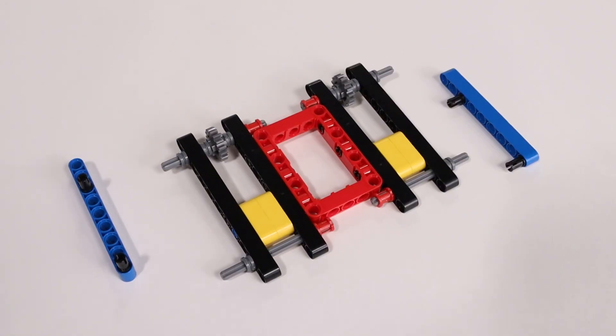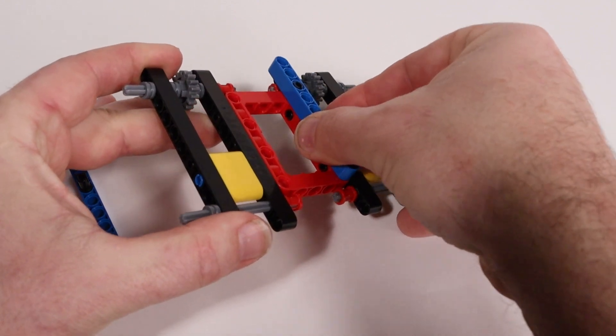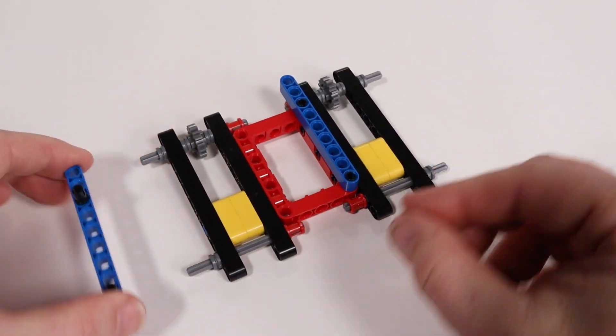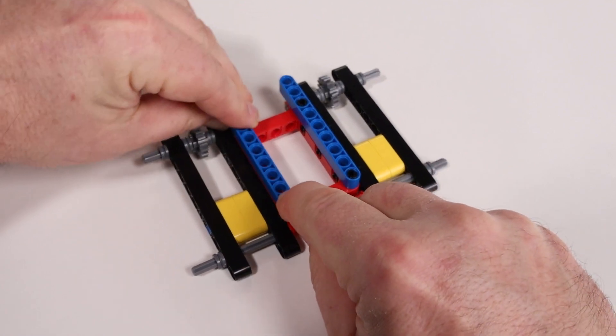Snap the blue beams onto the top of the red frame. The pin that's the third hole in should be towards the front of the tank and the pin that's in the far back end should be towards the back of the tank.